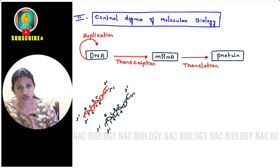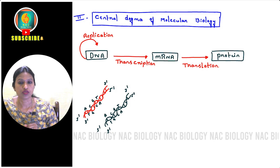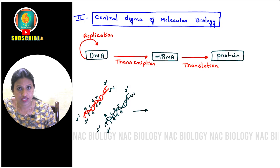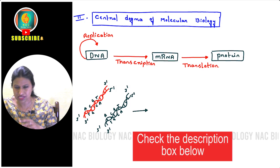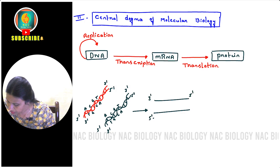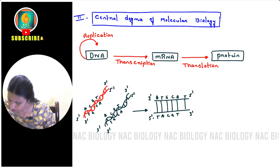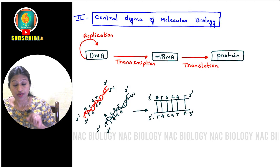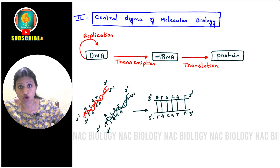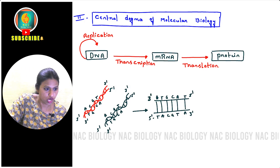In transcription, if I unwind or open the DNA strand and mark one strand as 3' to 5' and the other as 5' to 3', the information present on the 3' to 5' coding strand is copied. The strand will separate, and the complementary sequence will be produced as a new strand. Let me use another color to show how this exactly happens.